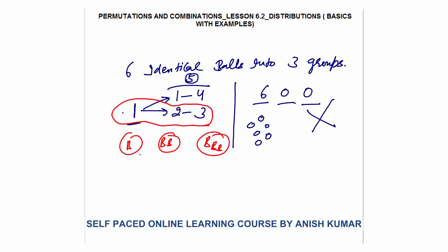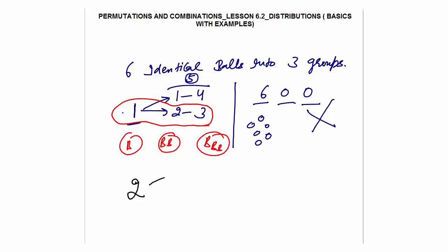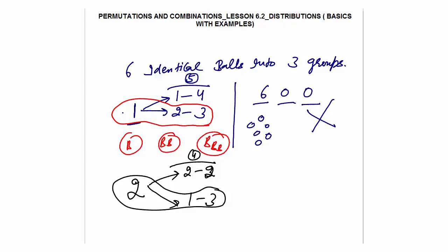Now all cases with 1 have been included, so 1 won't be taken again. We start with 2. Numbers will be 2 or more. I have taken 2; remaining are 4. 4 can be 2 and 2 only — because 1 and 3 would repeat the case (1, 2, 3). So only (2, 2, 2). So there are only 3 ways to distribute 6 identical balls into 3 groups.